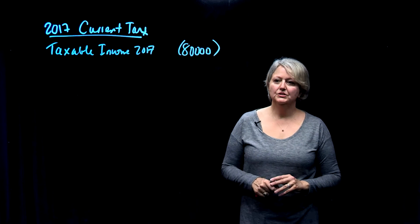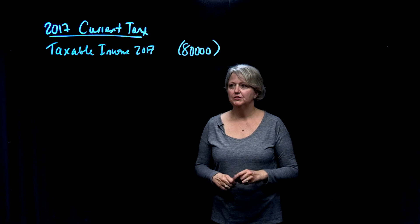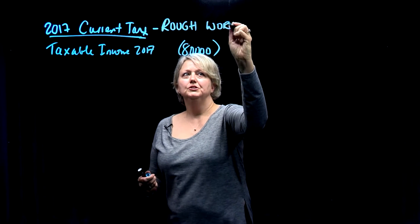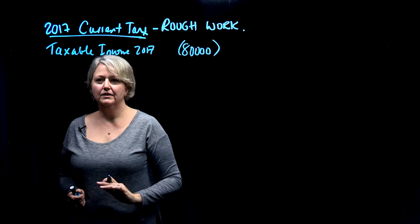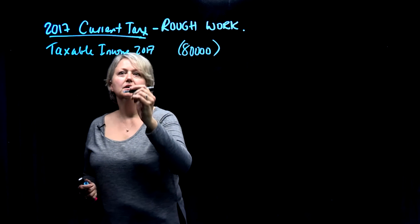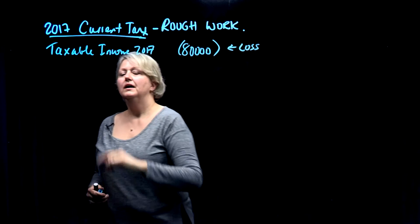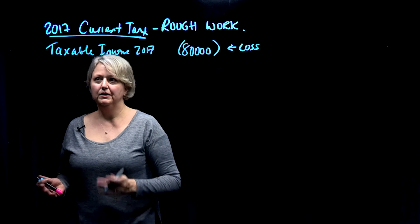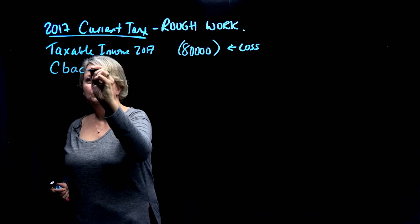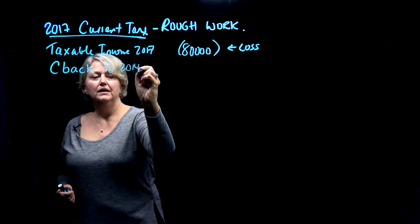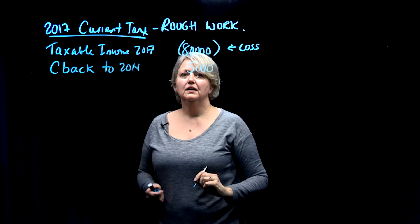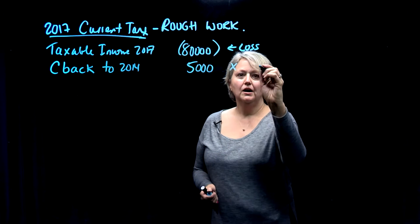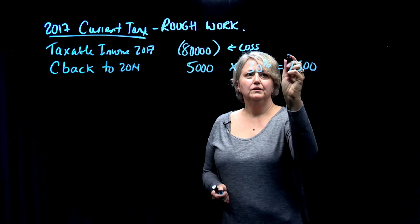So now we're ready to start doing the calculation of the tax entries for 2017. The first entry is the calculation of the current tax. This is our rough work to compute what our journal entry should be for our current tax expense. We've got a taxable loss of $80,000. We'll take that loss and look back up to three years ago. Three years ago was 2014 — we'll see if there was any taxable income paid. There was, so we will carry back our loss to 2014, where we paid tax on taxable income of $5,000. So we're going to ask for a refund of the tax paid on that $5,000: $5,000 times the tax rate equals a $1,500 refund.